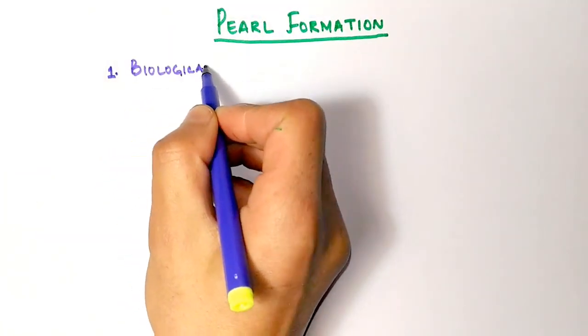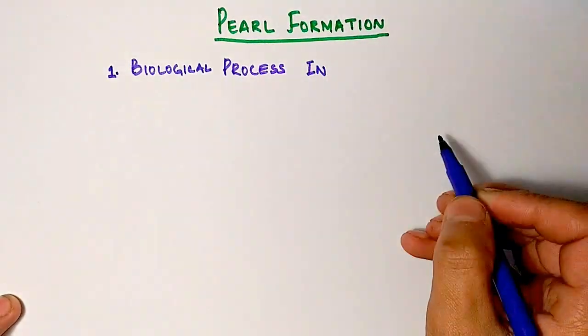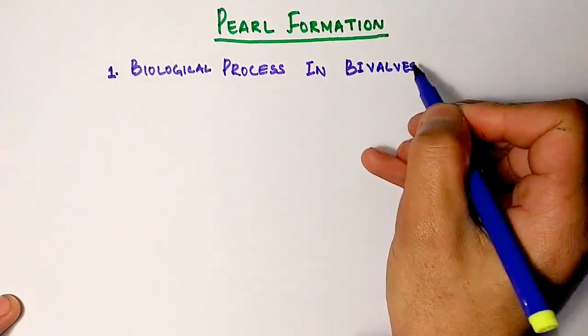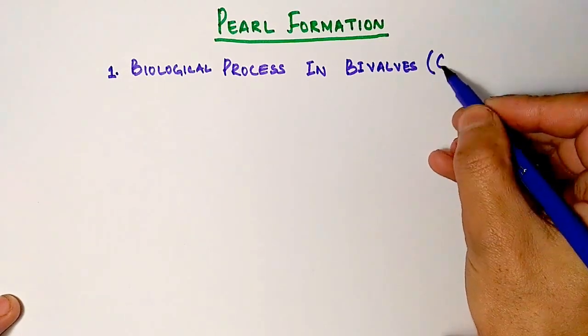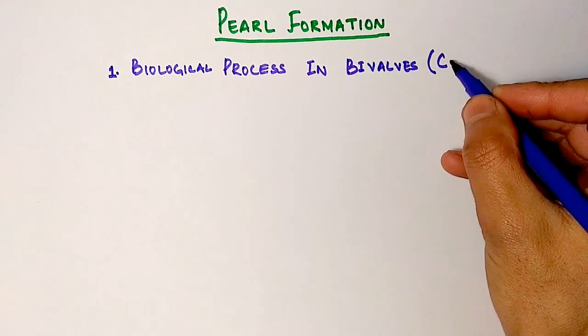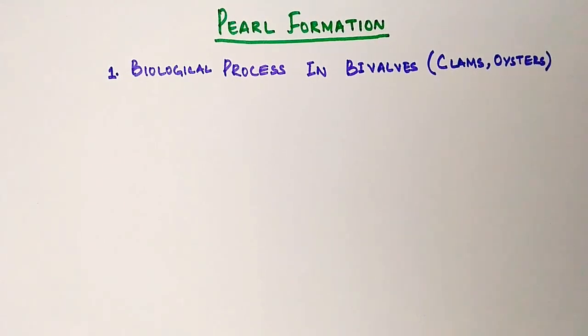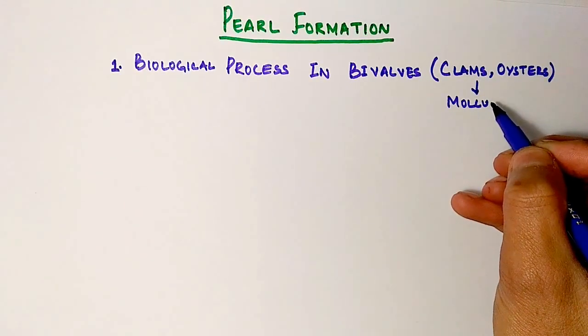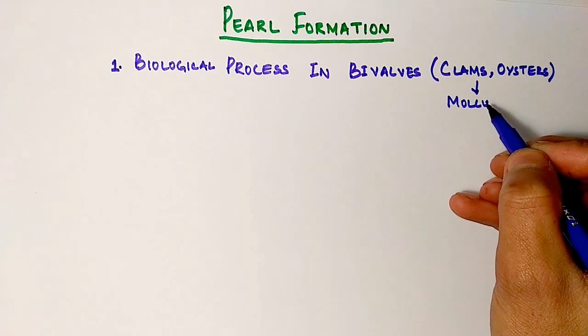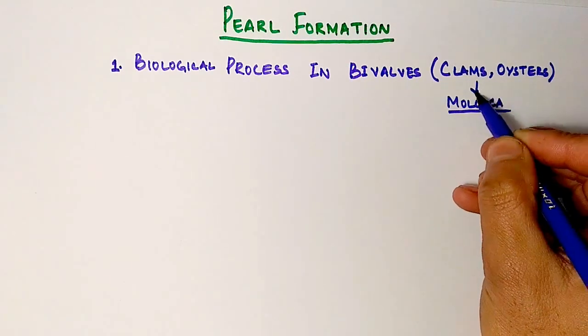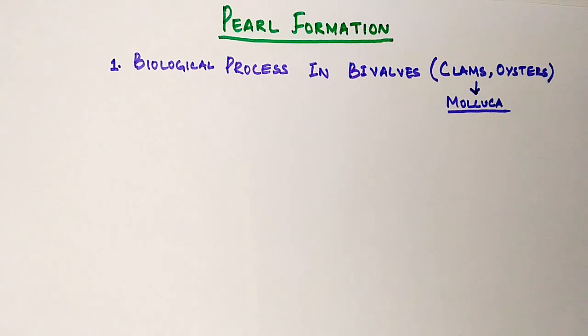First of all, this pearl formation is wholly and solely a biological process. There are other means by which these pearls are formed that we call artificial means, but real pearl formation is a biological process. This pearl formation occurs in bivalves that are the clams and oysters. These clams and oysters are a group of organisms from molluscs.